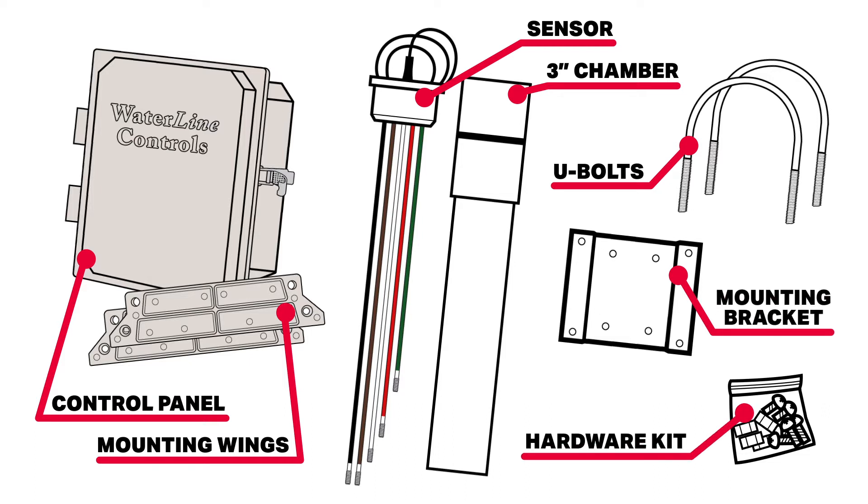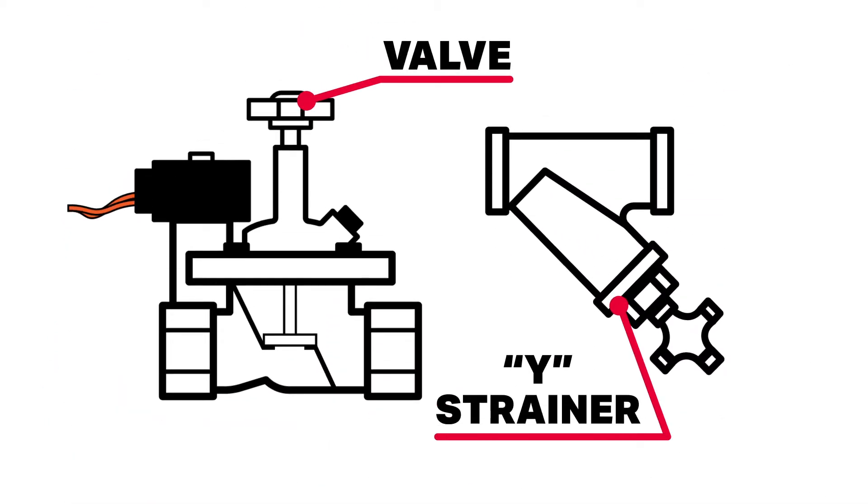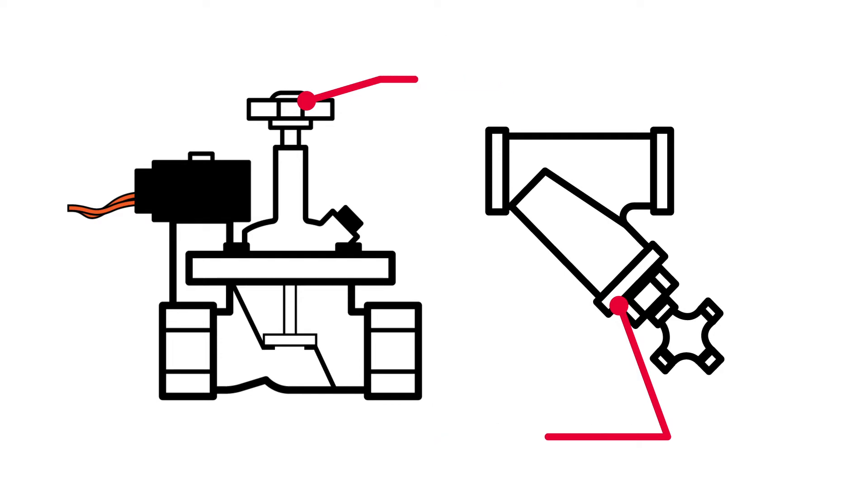The sensor wire can be ordered in longer lengths as needed. A valve and a Y-strainer are needed for installation and can be purchased from waterline controls.